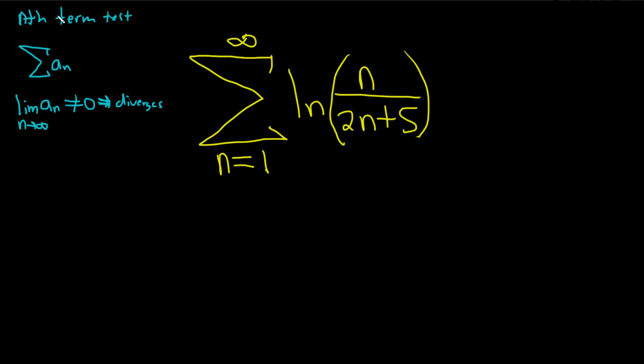Some books will call it the nth term test for divergence because a very common mistake is people will say stuff like oh converges by the nth term test, super bad.